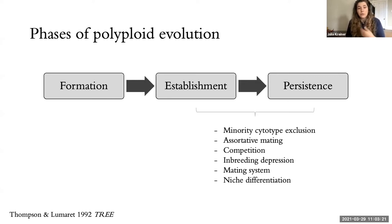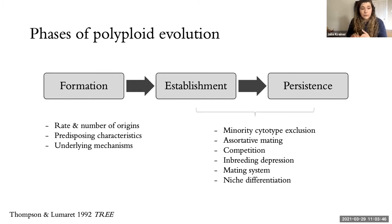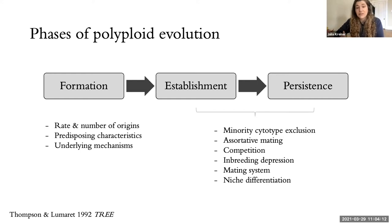The minority cytotype exclusion principle is the mating disadvantage that new polyploid individuals experience — mating competition, inbreeding depression, and how polyploidy influences ecological and evolutionary factors. But the first phase, formation, has experienced a lot less work. That means understanding the rate and number of origins of polyploid formation, predisposing characteristics that species might have, and the underlying mechanisms of polyploid formation. I'm excited to hear how Ben's followed up on my data to think about how polyploid formation through unreduced gametes feeds into later processes like establishment.